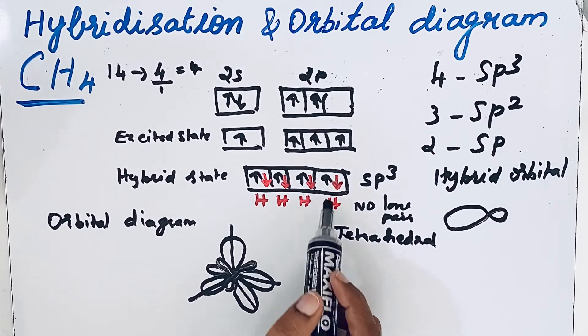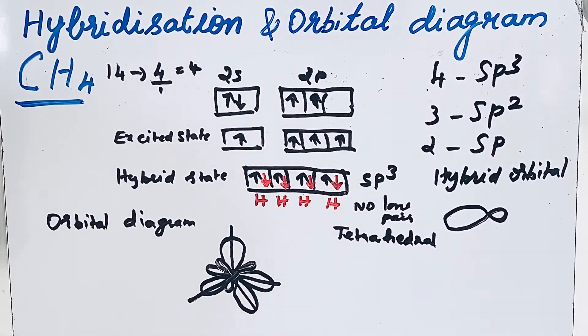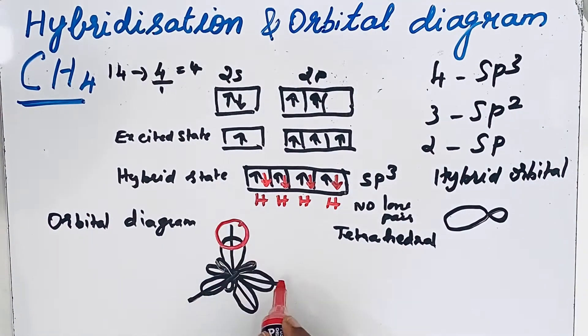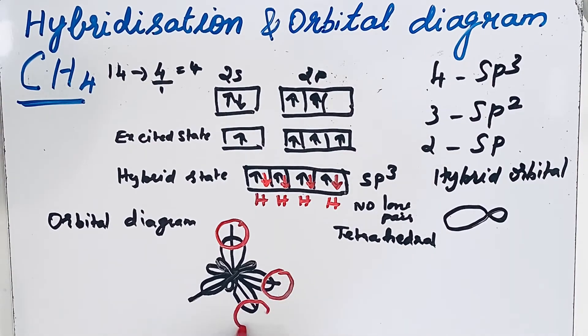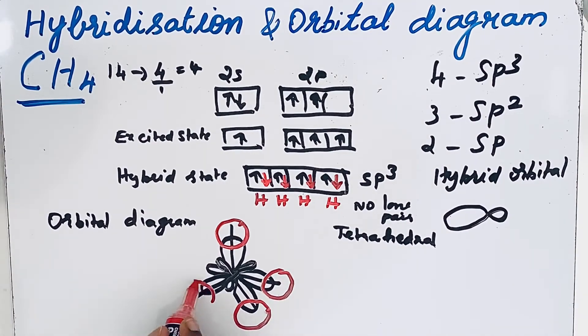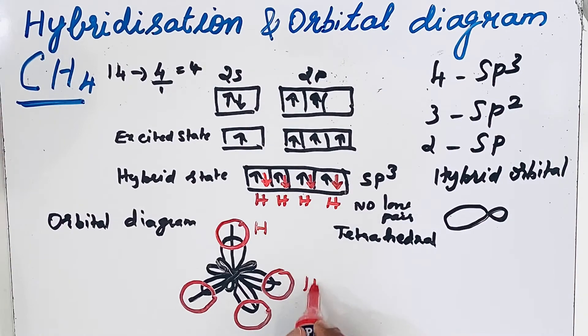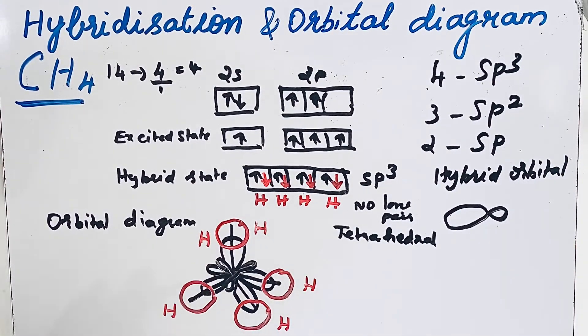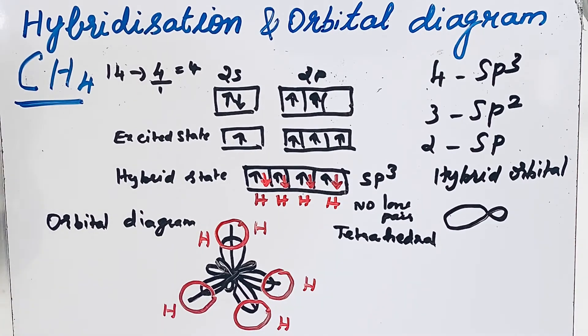How many hydrogen atoms are there? 4 hydrogen atoms. So in hydrogen we have only S orbital. That is spherical in shape. So hydrogen, 4 hydrogen atoms. So this is the orbital diagram of sp3 hybridization.